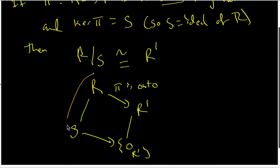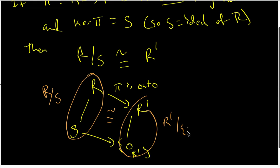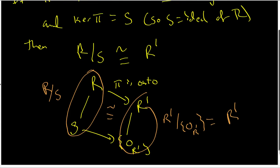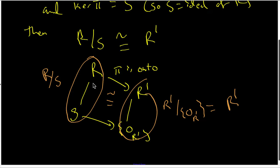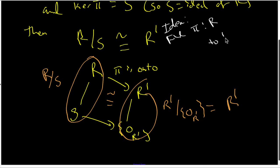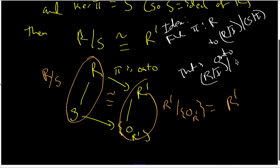The conclusion is that the quotient structure R mod S is isomorphic to R prime. If you're just modding out by the zero ideal, you actually just have the ring itself. In order to use the first isomorphism theorem, what we have to do is find a map from R to the target ring R mod I modded by S mod I.